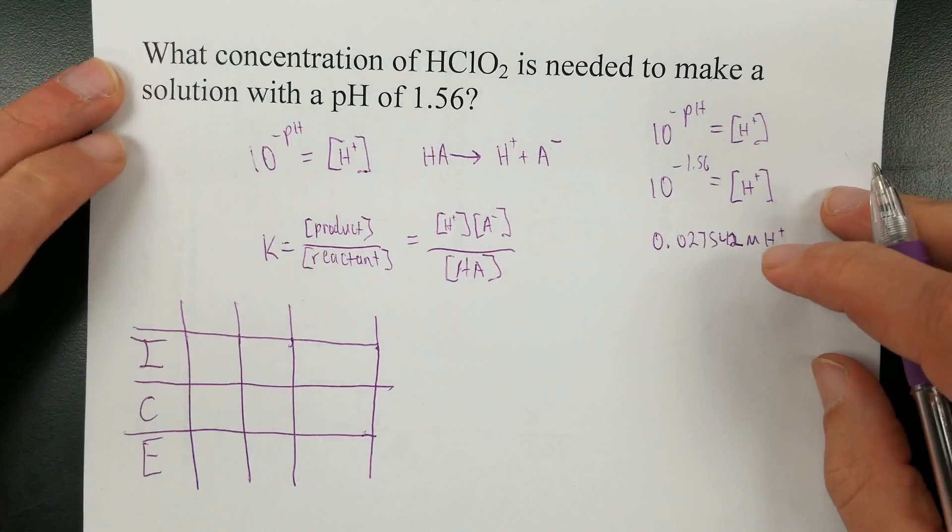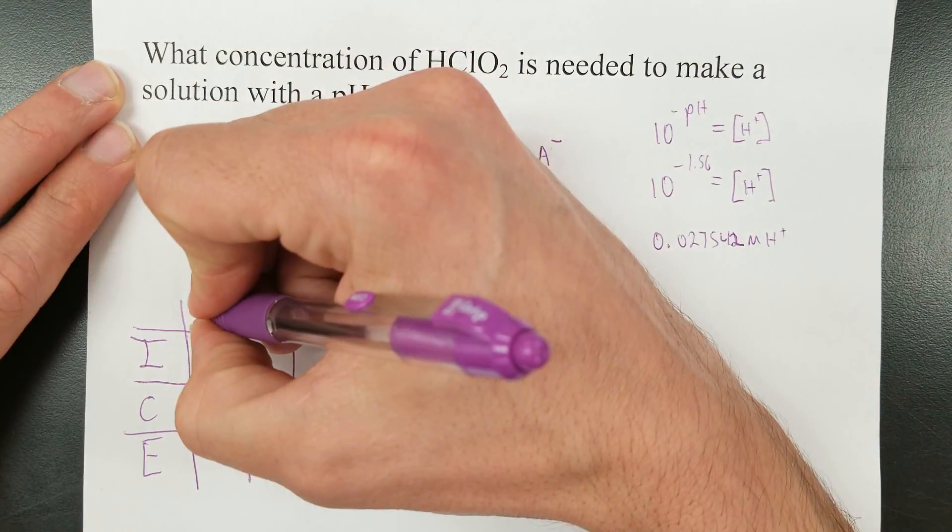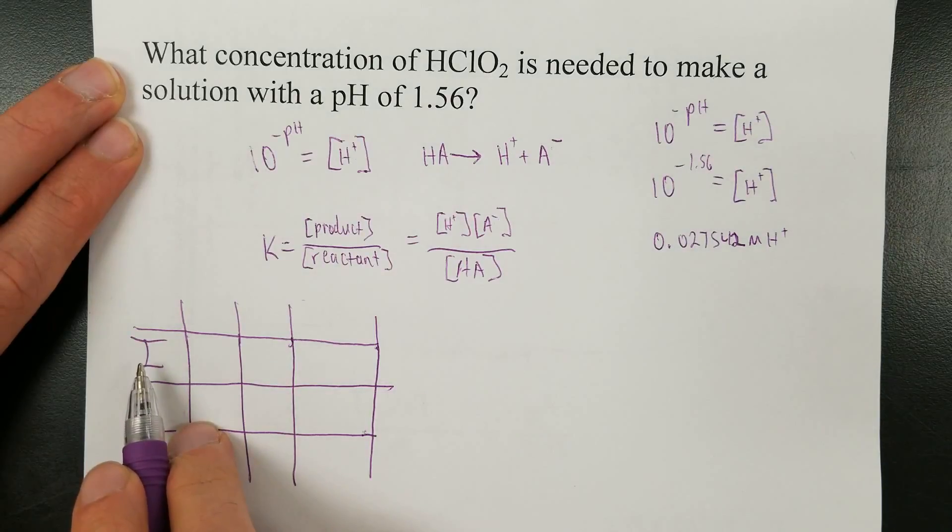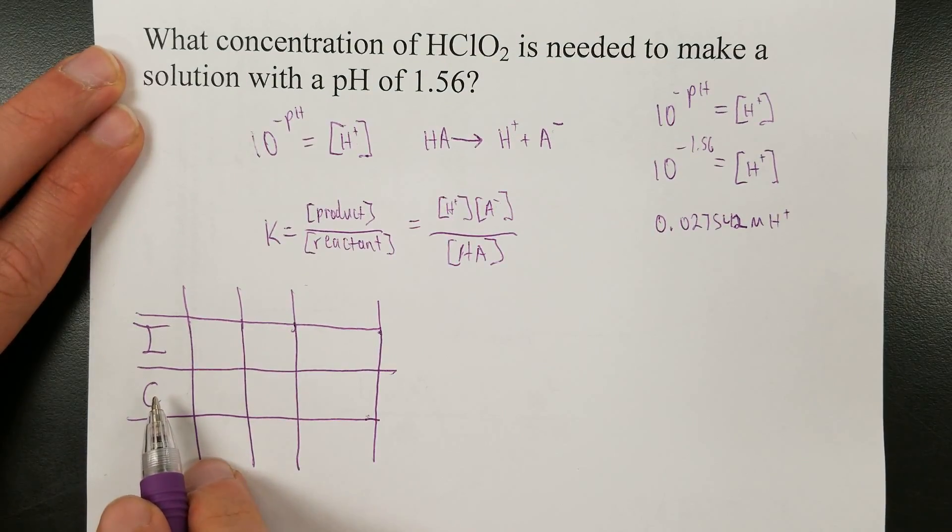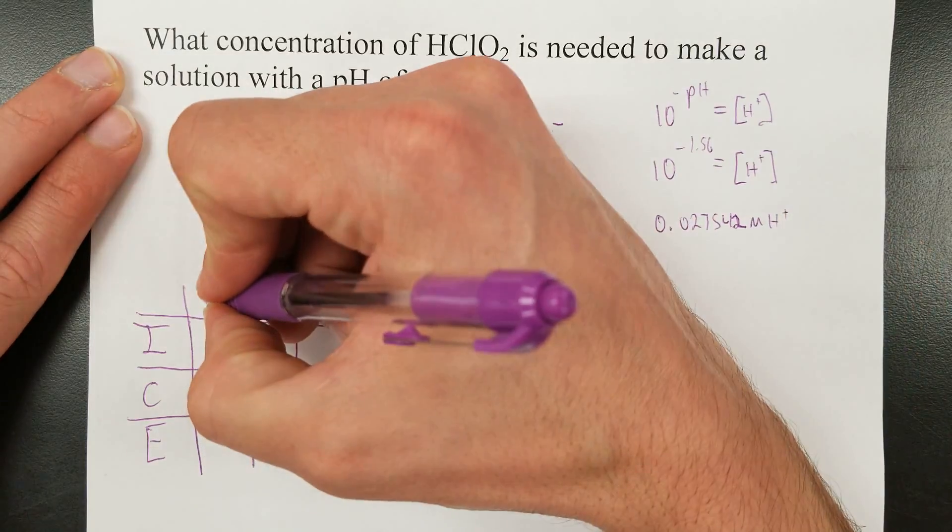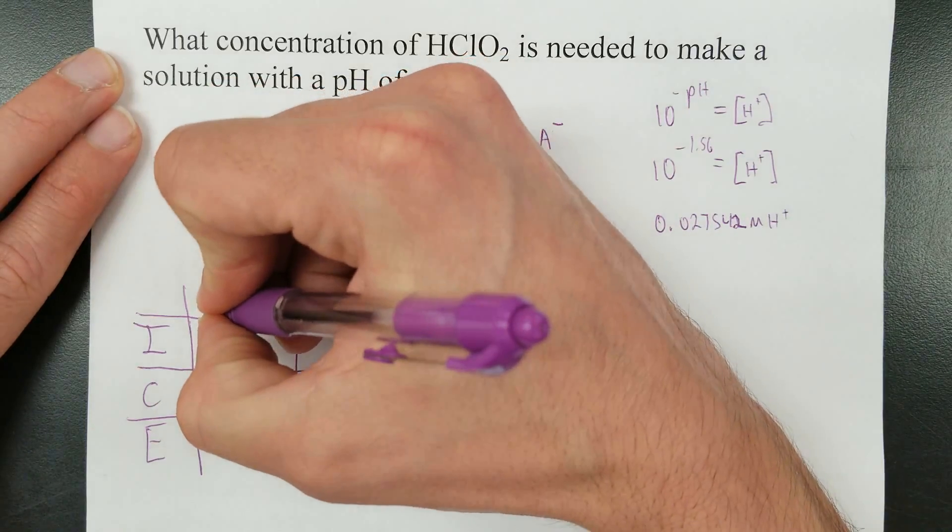ICE table. Okay, there we go. That's a nice table, where we have the initial concentration, the concentration at equilibrium. Sorry, the change in concentration, and this is the concentration at equilibrium, a.k.a. at the end.